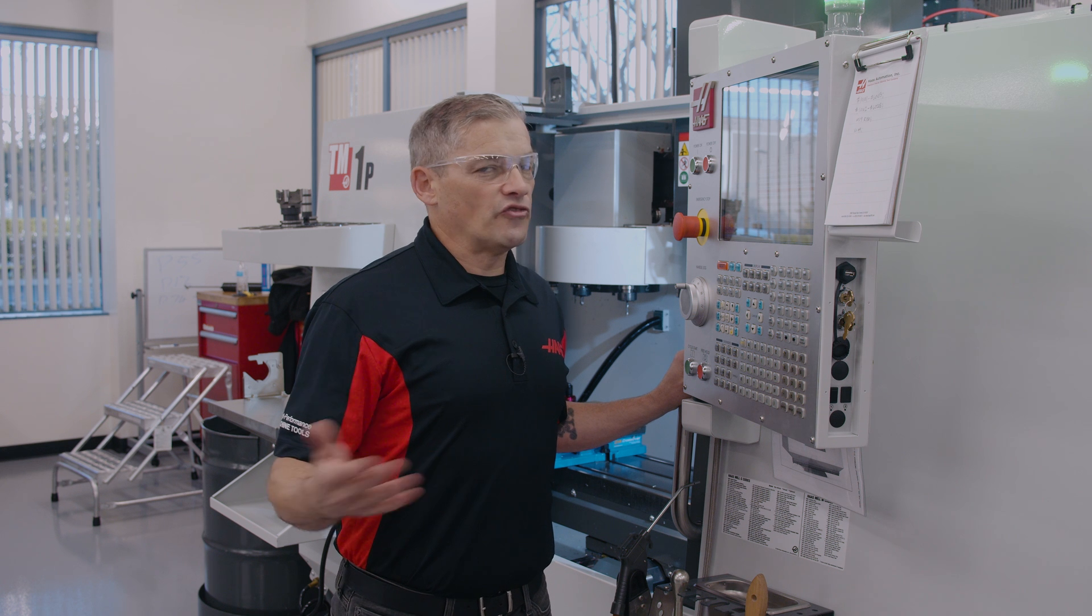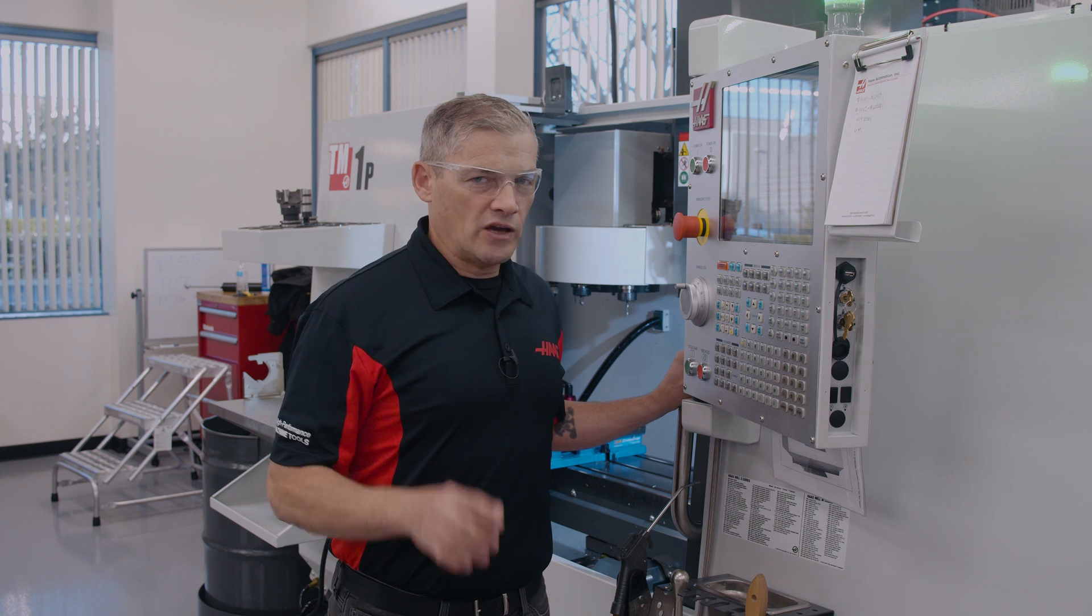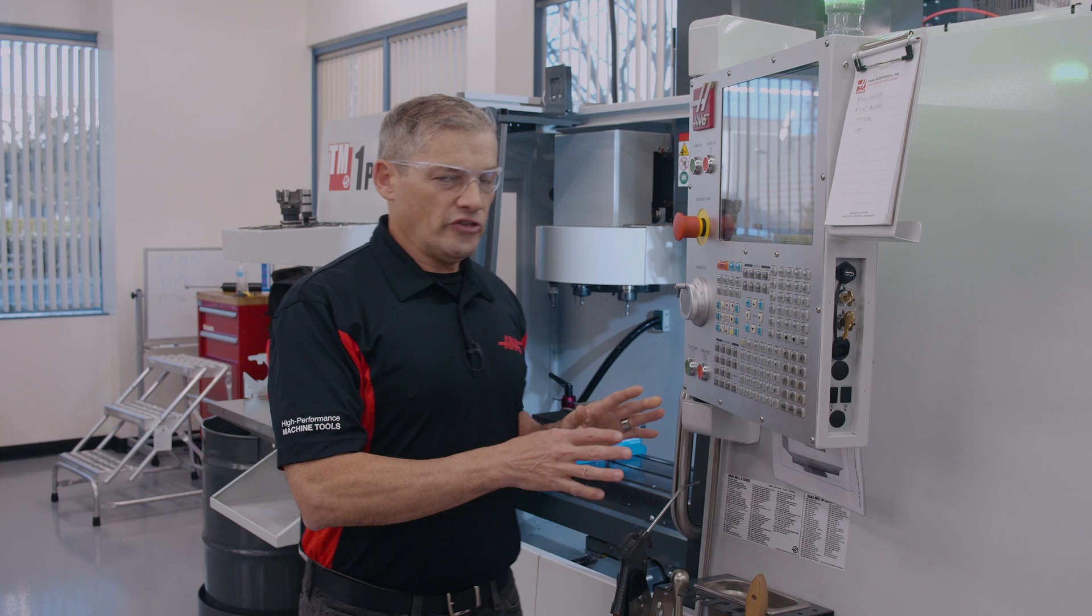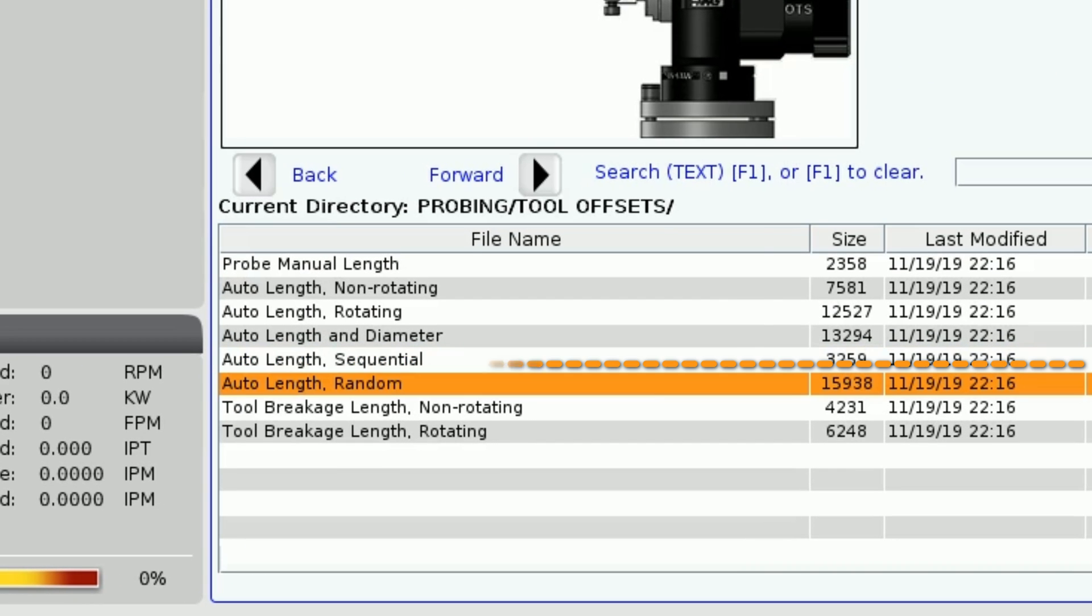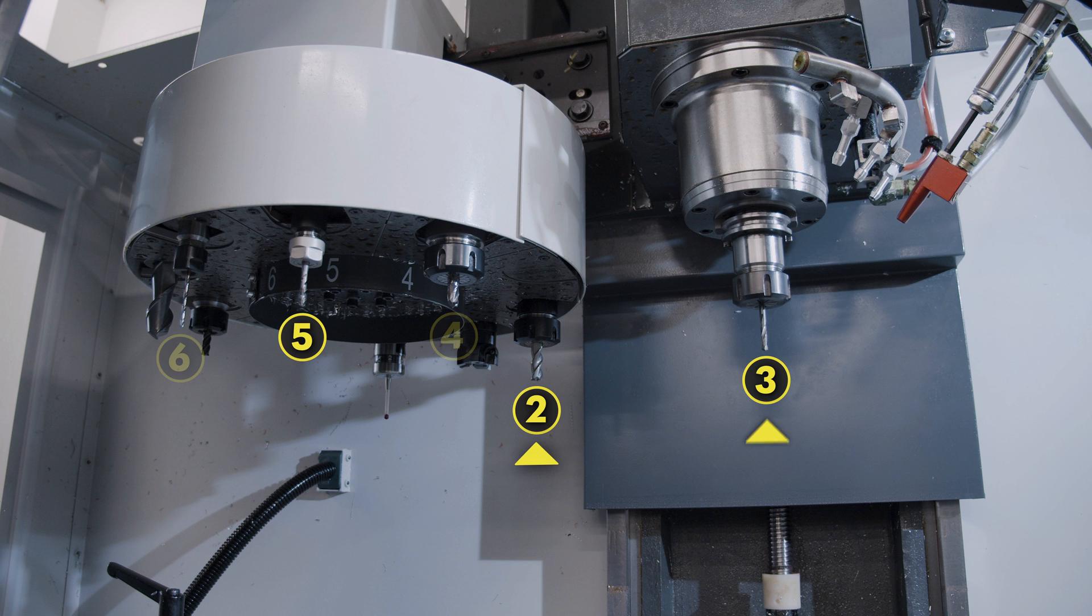Now the last thing we'll look at is a variation of the multi-tool check we just finished. This time, let's select auto length random. Maybe for a new part, I'm only making changes to tool numbers two, three, and five out of the six tools I'm using.